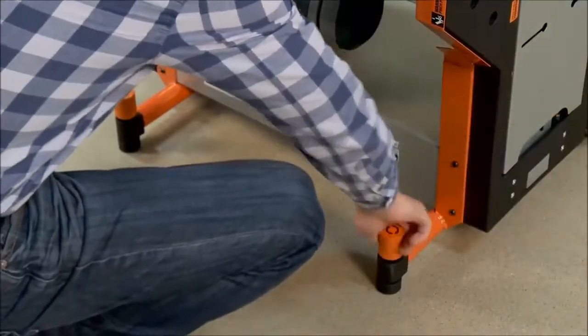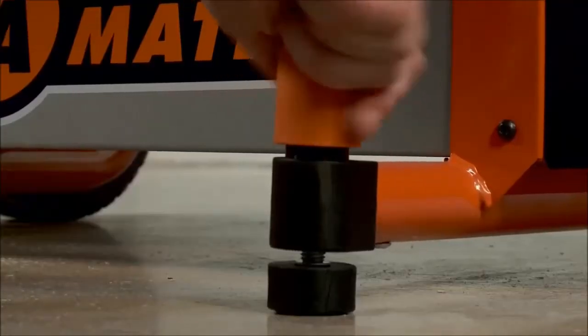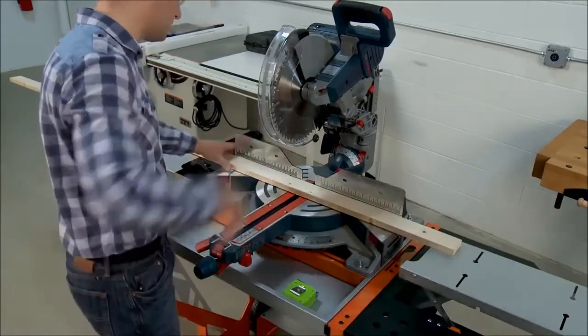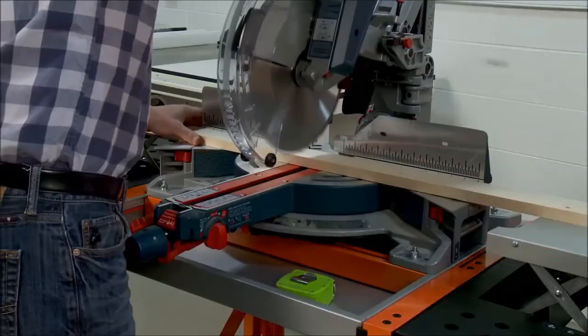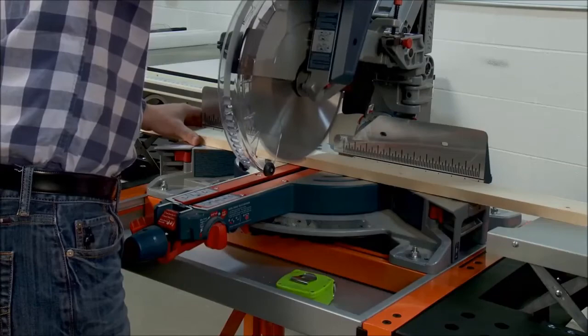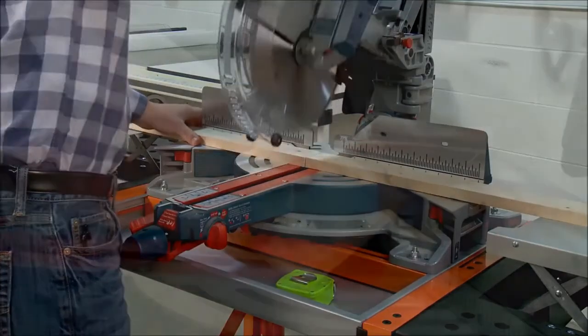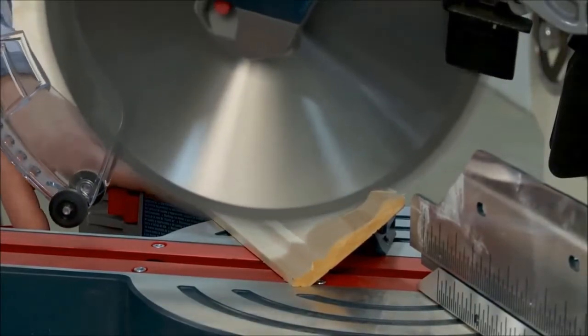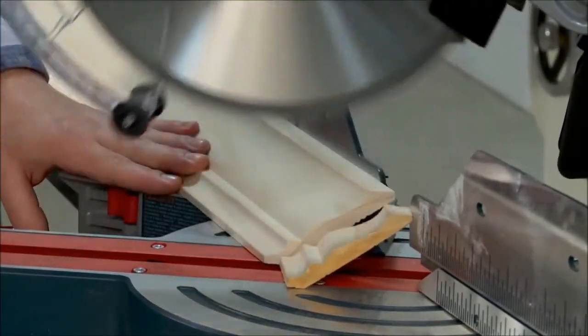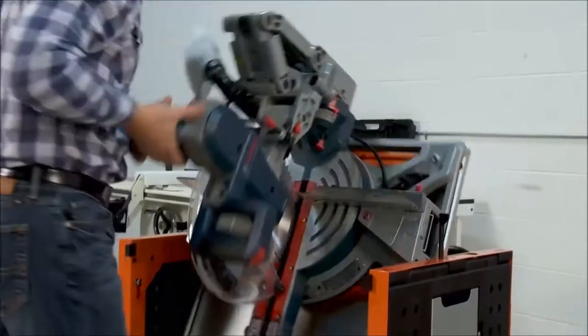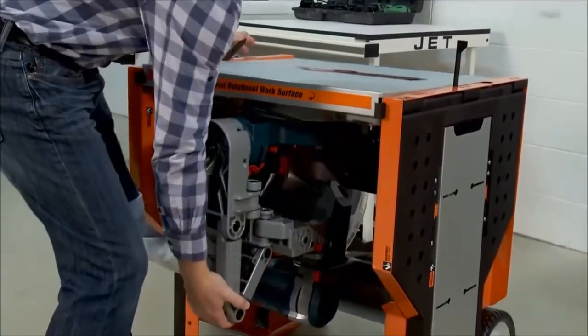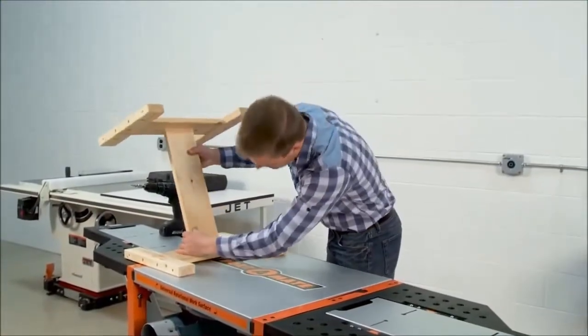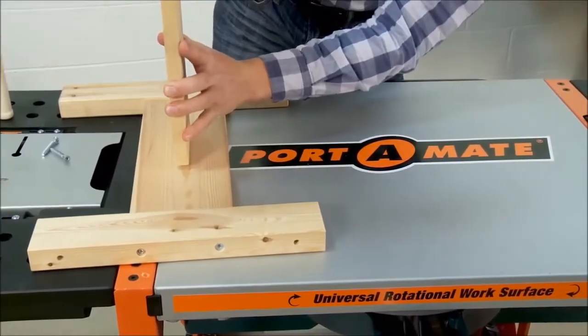Adjustable feet can be used for leveling on uneven surfaces. With the Portacube STR fully expanded, you are ready to start making cuts with your miter saw. When cutting is complete, rotate your saw back into storage and the Portacube STR transforms into a seven-foot work surface, perfect for working on additional projects you may have.